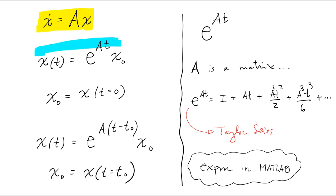X of t equals e to the AT X naught. And X naught is the initial condition at T equals zero. If you want to write it more generally, you can write it in this form, where X is equal to e to the A times t minus t naught, assuming that you are starting at a time that is not zero, it's just some initial time T naught, and you know the state at that time.